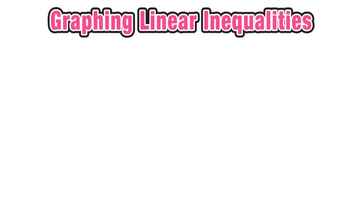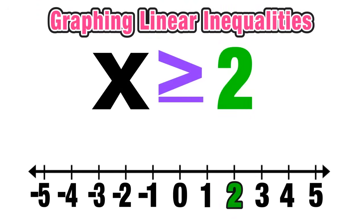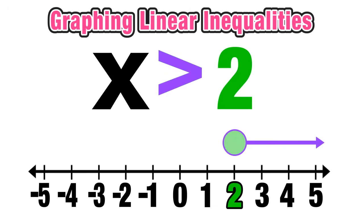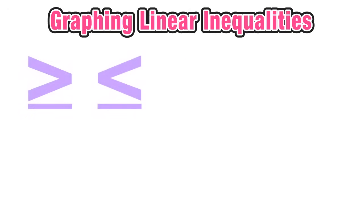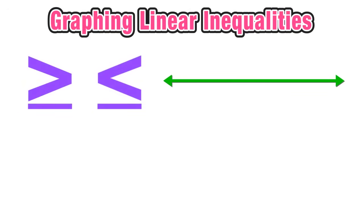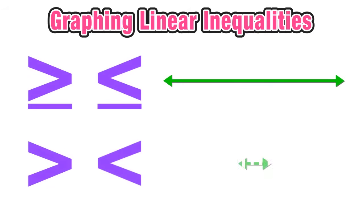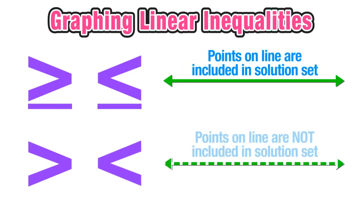To clarify: for x ≥ 2, the solution is any value greater than or equal to 2, including 2. For x > 2, the solution is any value greater than 2, but 2 is not included. When graphing linear inequalities, greater than or equal to and less than or equal to use a solid line (points on the line are included), while greater than and less than use a dashed line (points on the line are not included).